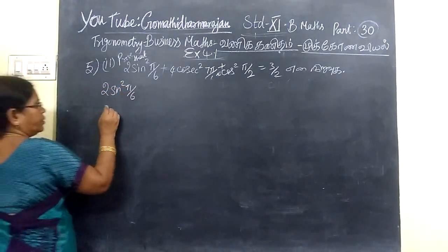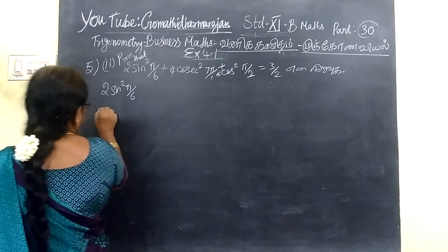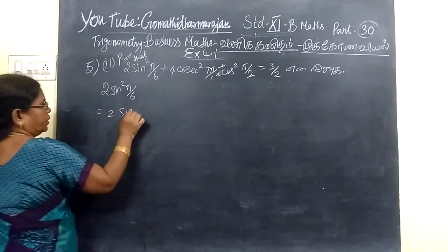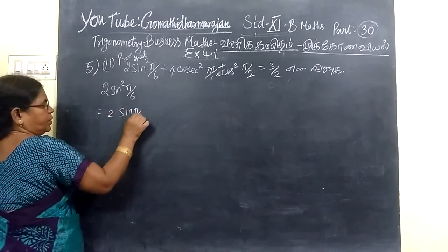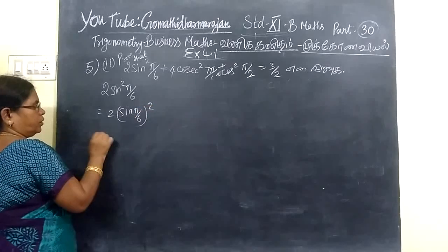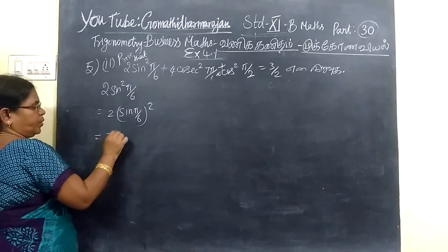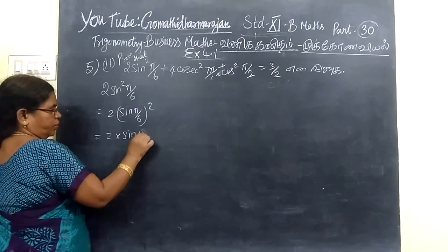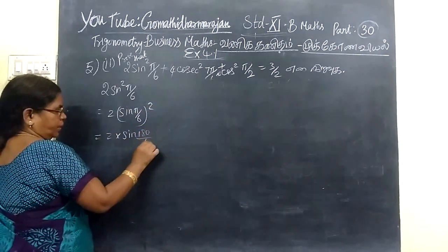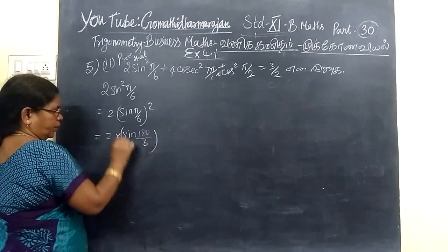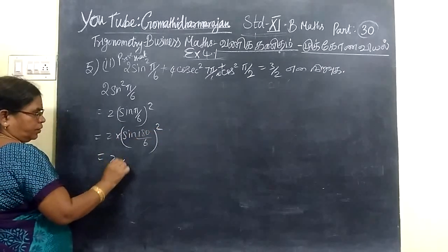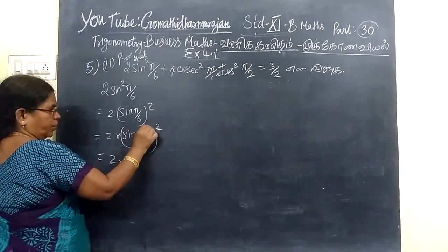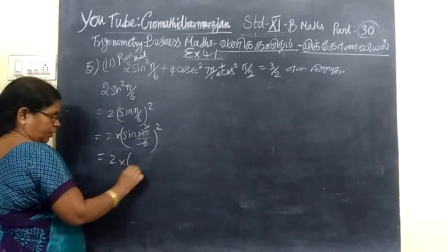This is equal to 2 into sin(5π/6). Now, sin(5π/6) — here 5π means 180 by 6. So this becomes 180 by 6, which gives us 30. If you cancel, you get 30.